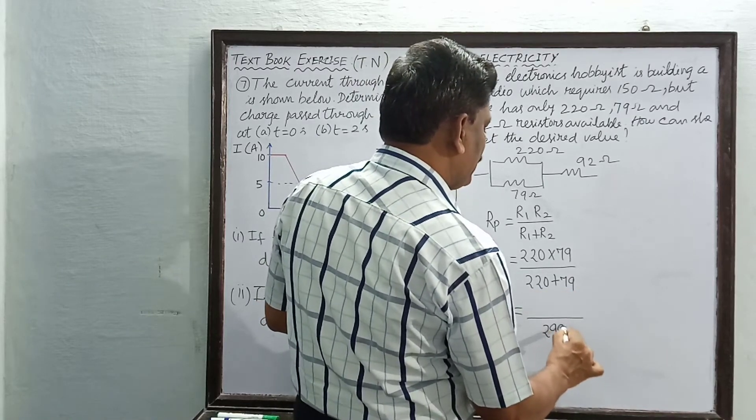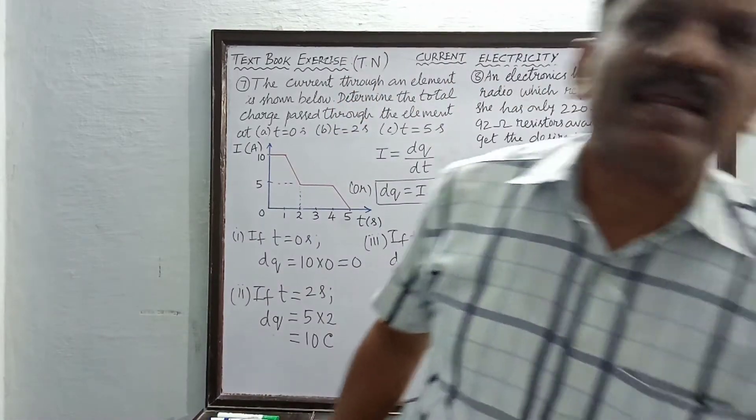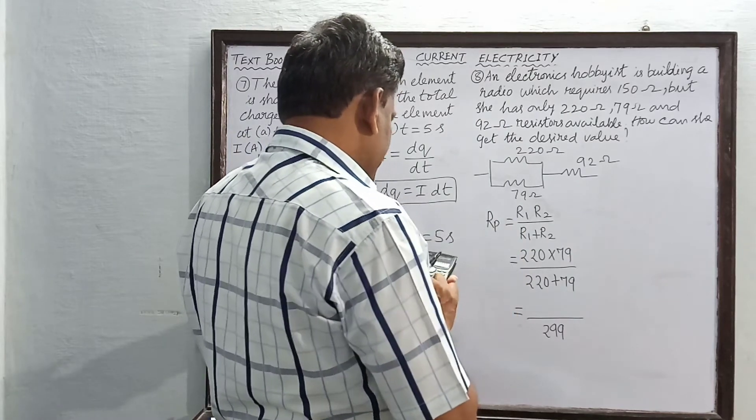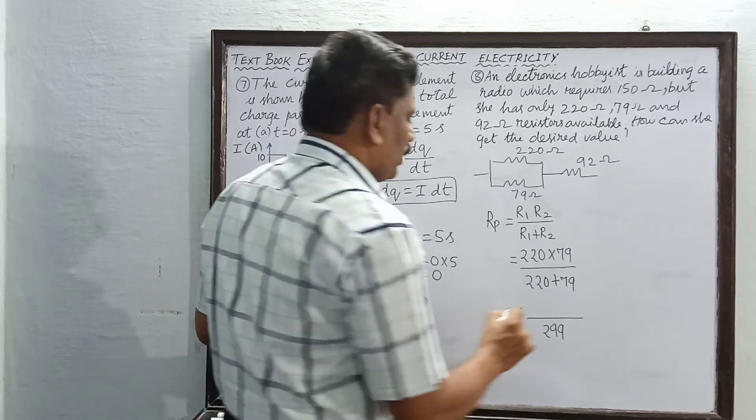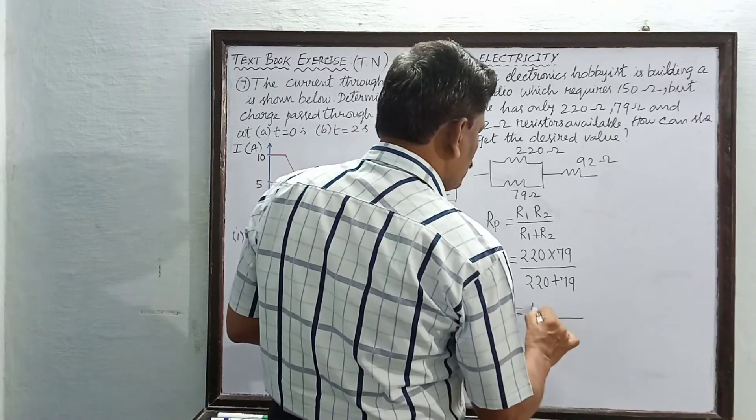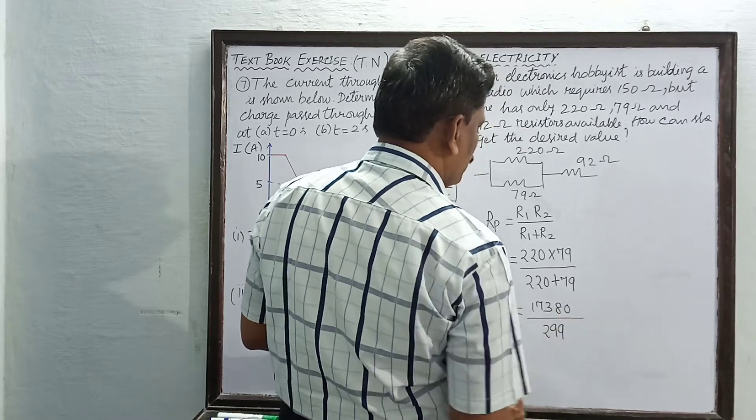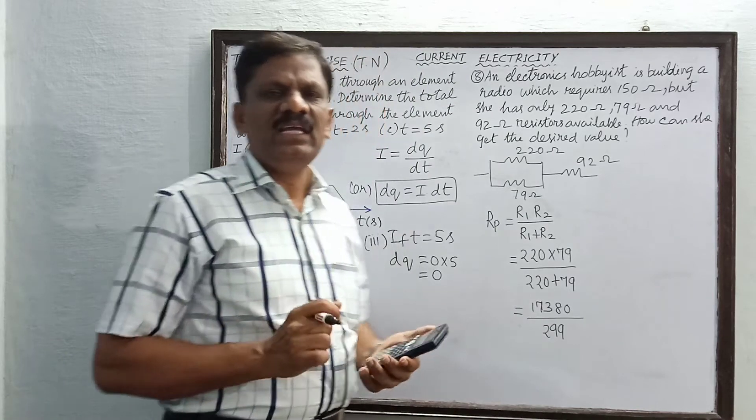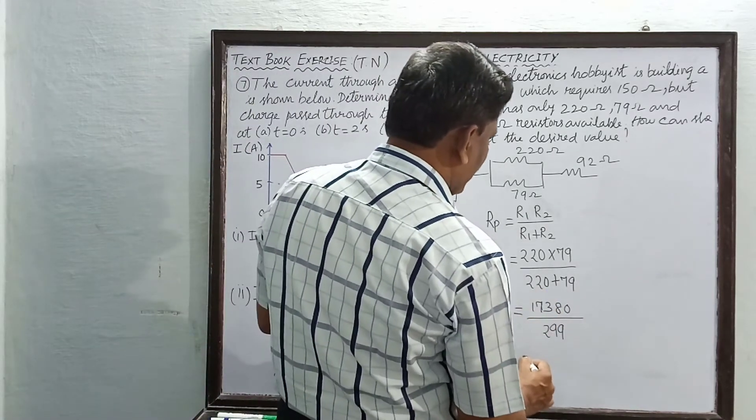Now the numerator I am going to multiply with the calculator. So 220 into 79, 220 into 79 is found to be 17380. So 17380. Once again we have to find the ratio of 17380 divided by 299.